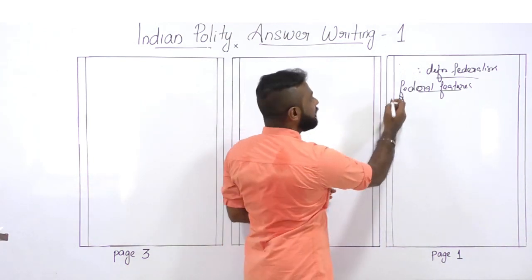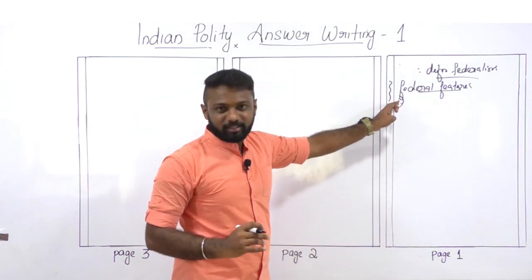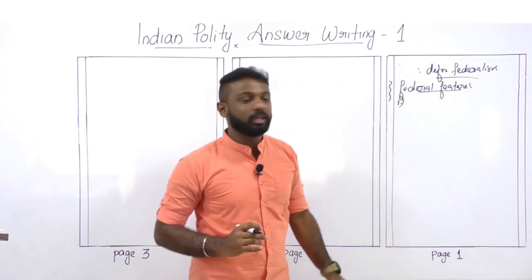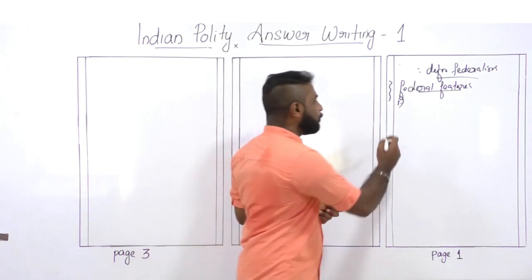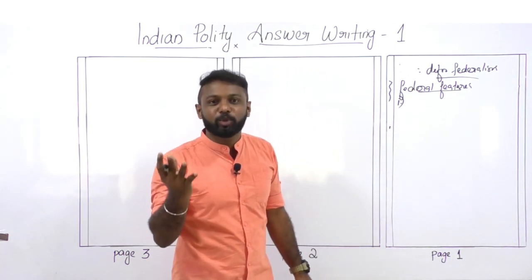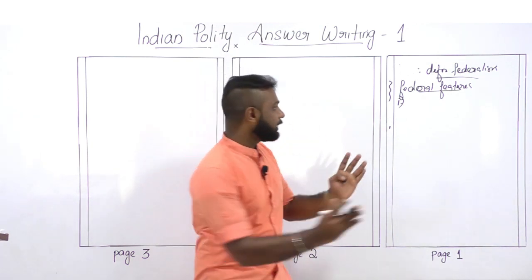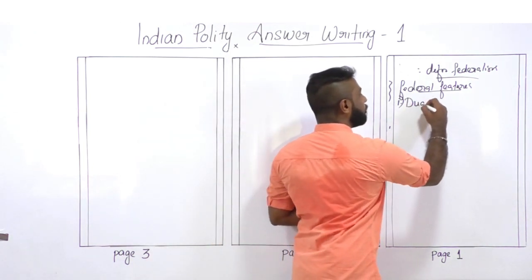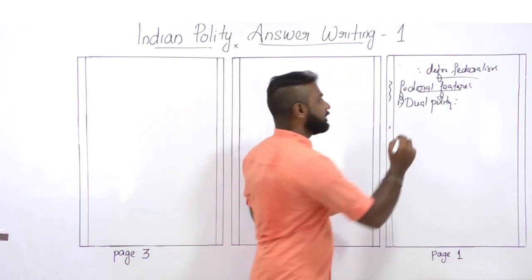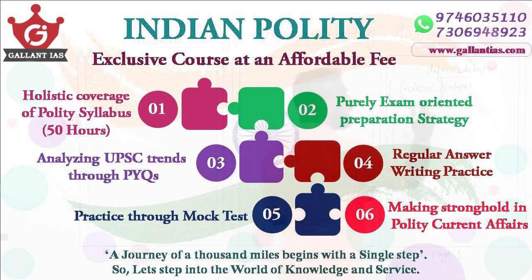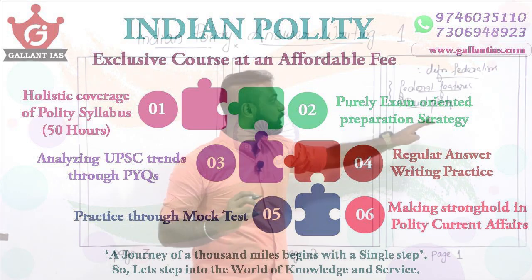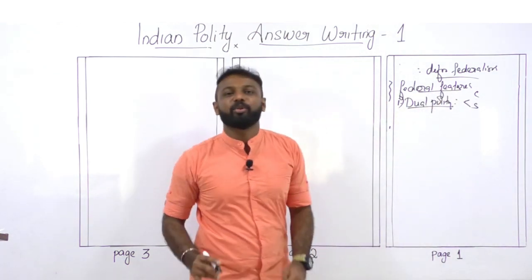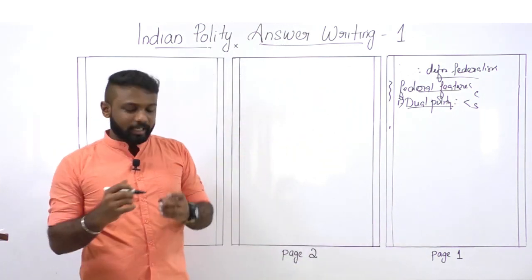When you use points, please don't write in the margin spaces — the space on the left is where the question number is printed by UPSC, and the right space is for the evaluator. Writing there could result in negative marks. Write only in the space provided. The first federal feature is dual polity — underline this point. Dual polity means the presence of two governments: the central government and the state government, to ensure regional autonomy of states.